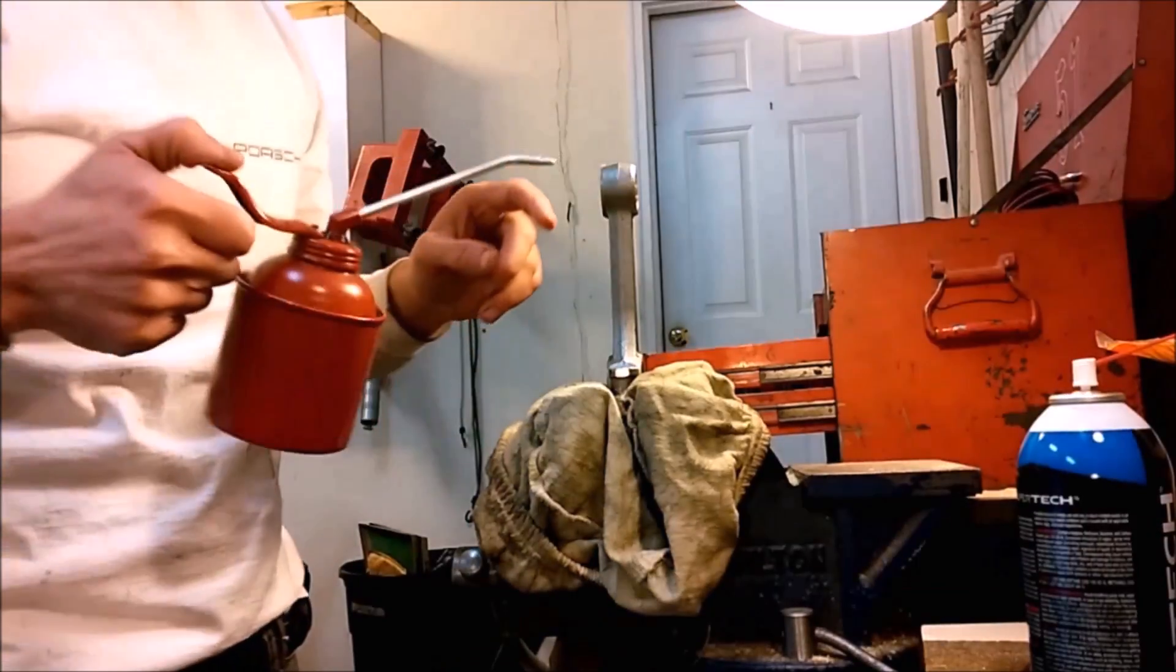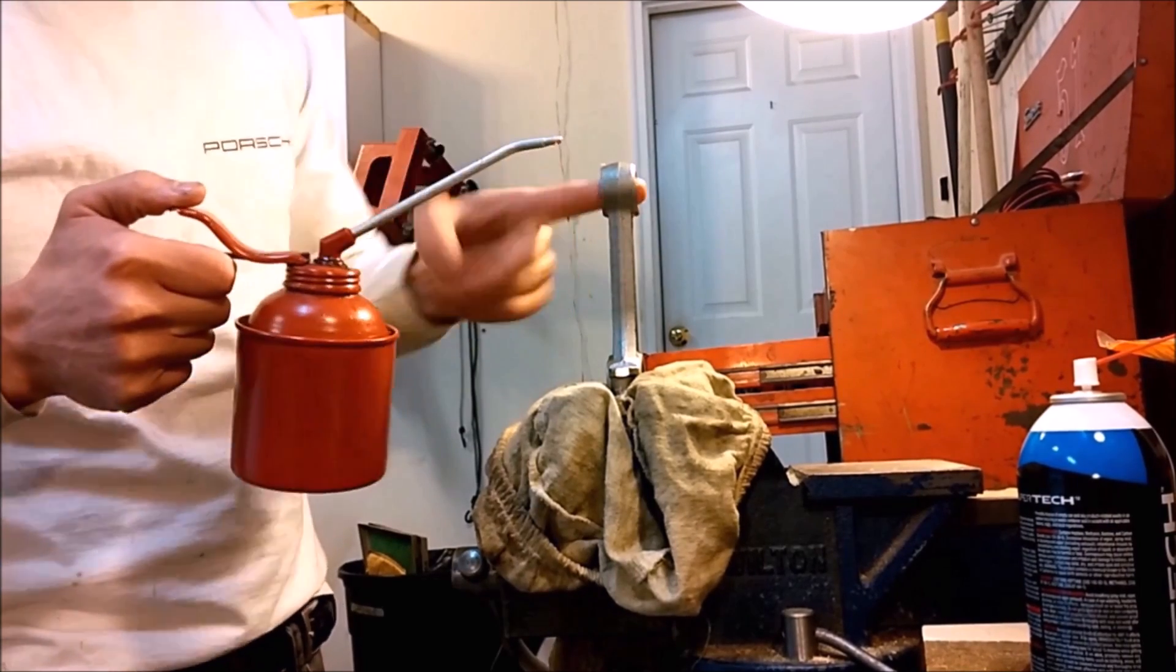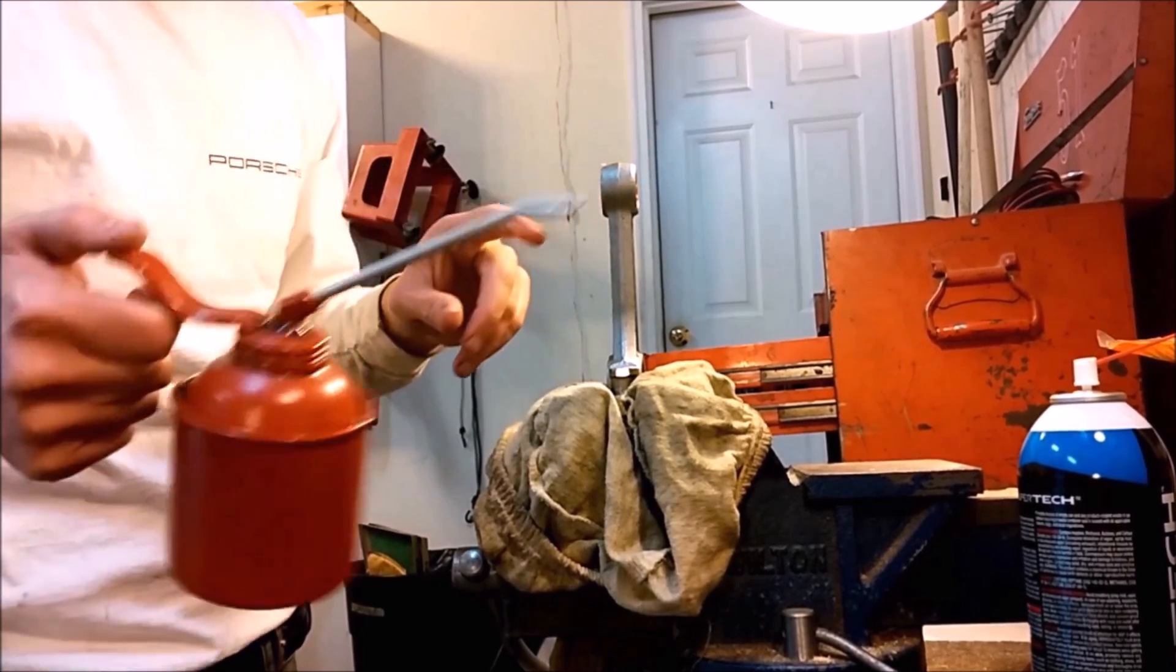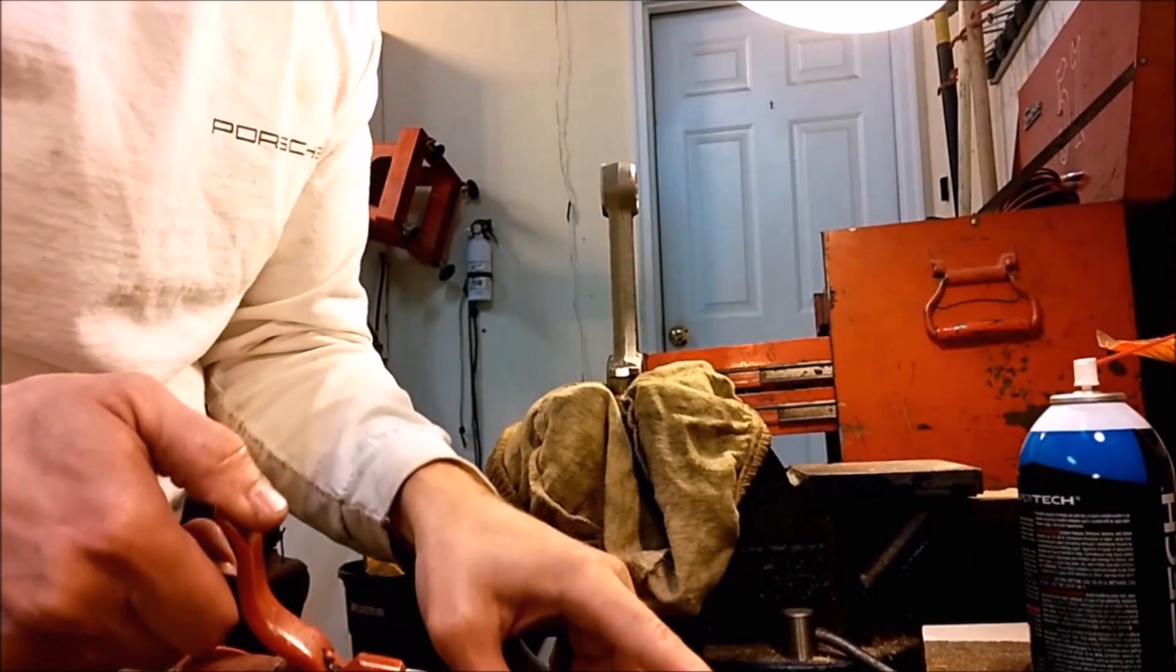Lubricate the piston. You can use carb cleaner to remove any rust inhibitor that the manufacturer may have put on here that might be on the piston. So lubricate the piston. Lubricate the wrist pin.